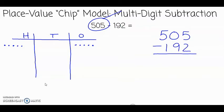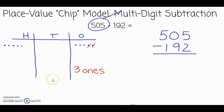Now I am ready to subtract. I'm going to look at the number 192. There are two ones in the number, so I'm going to go to the ones column and subtract or take away two ones. On my place value chart I see that I have three ones remaining. If we look at the algorithm and look at the ones column, we have five ones minus two ones gives us three ones.